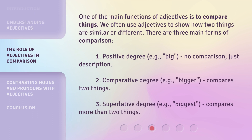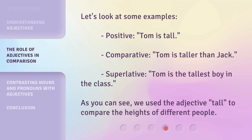One of the main functions of adjectives is to compare things. We often use adjectives to show how two things are similar or different. There are three main forms of comparison. Let's look at some examples. As you can see, we use the adjective 'tall' to compare the heights of different people.